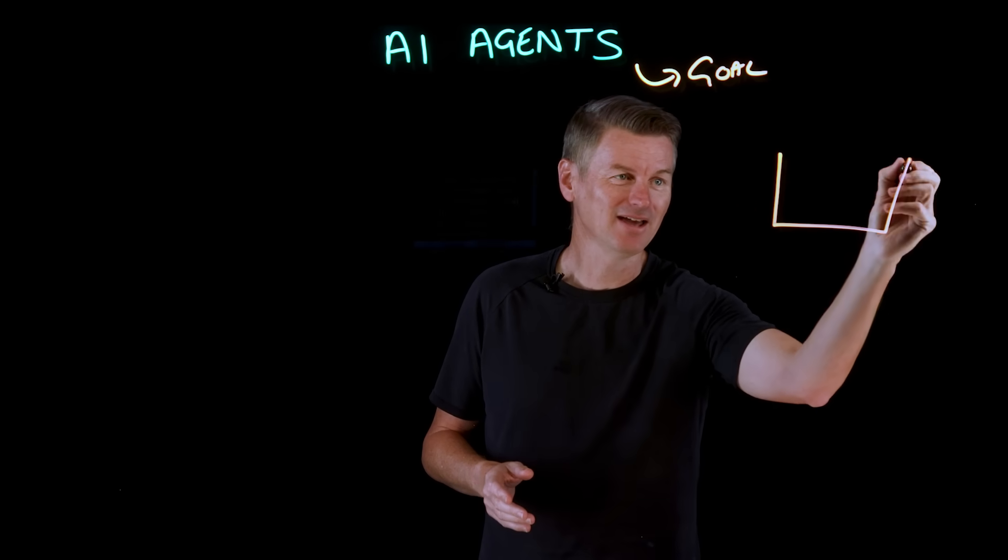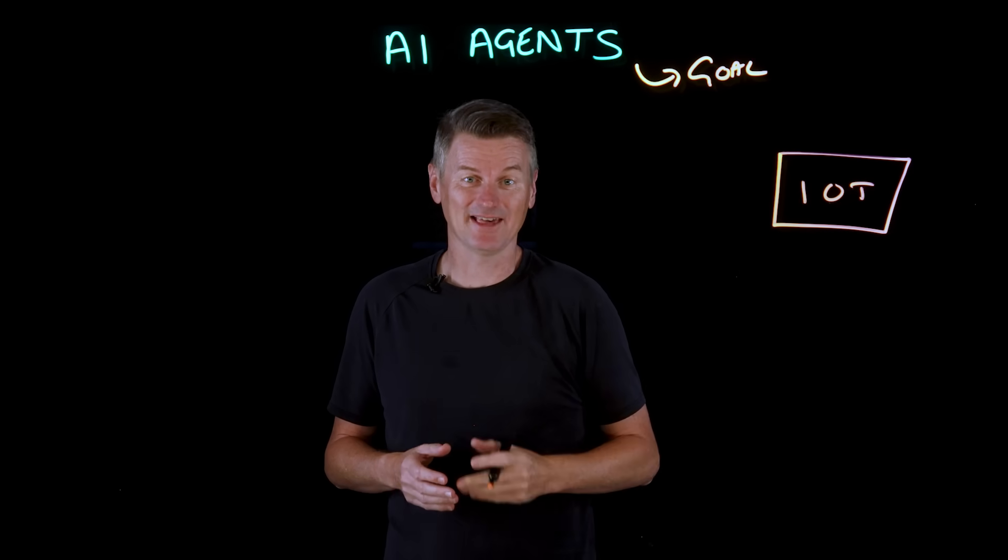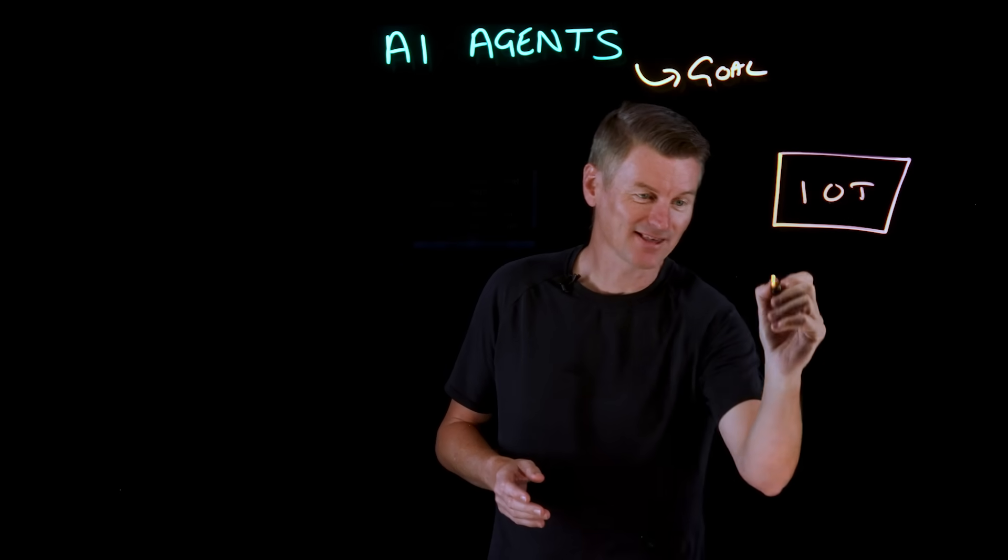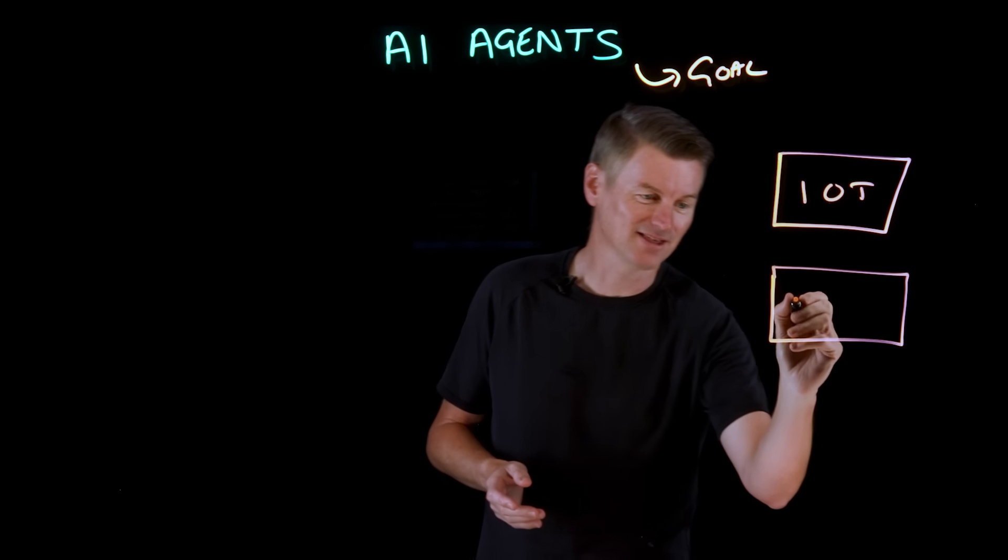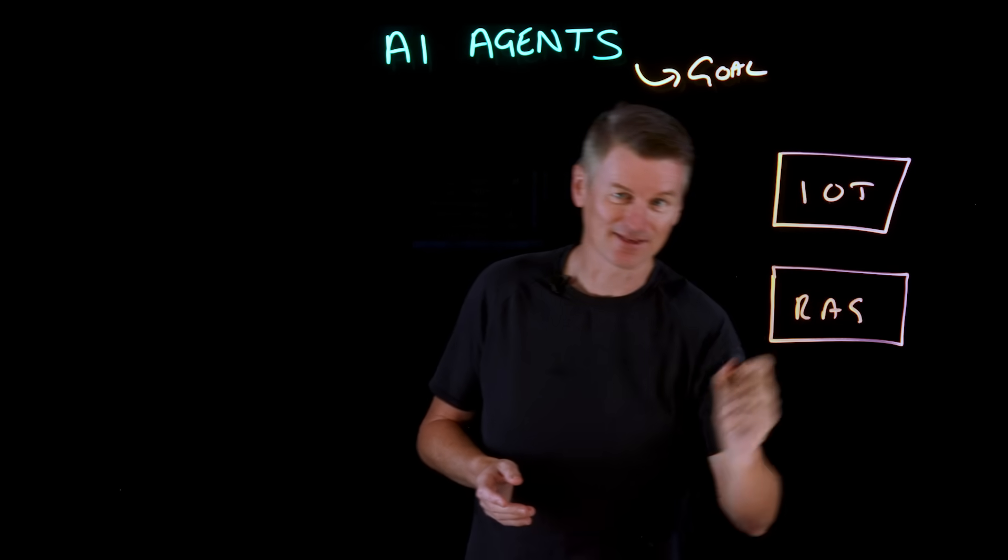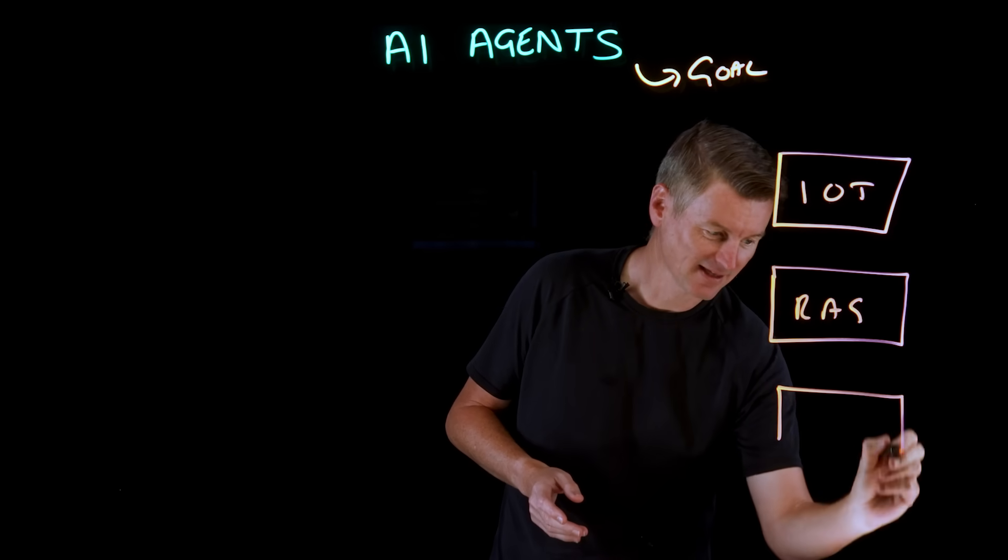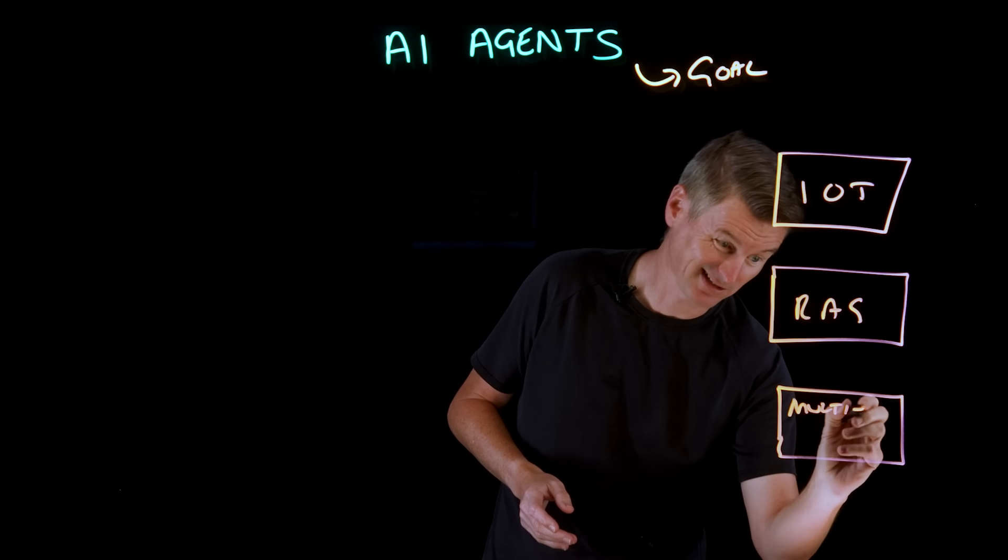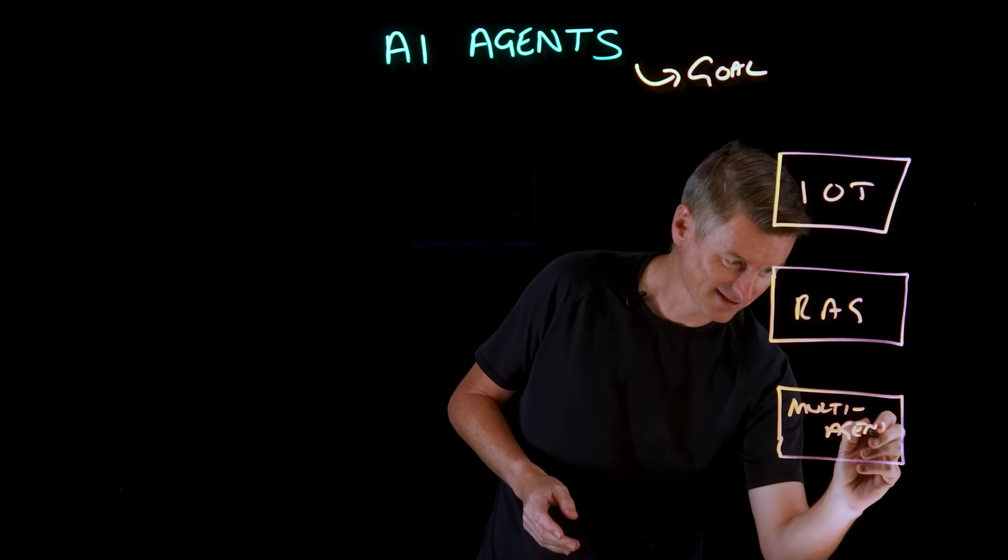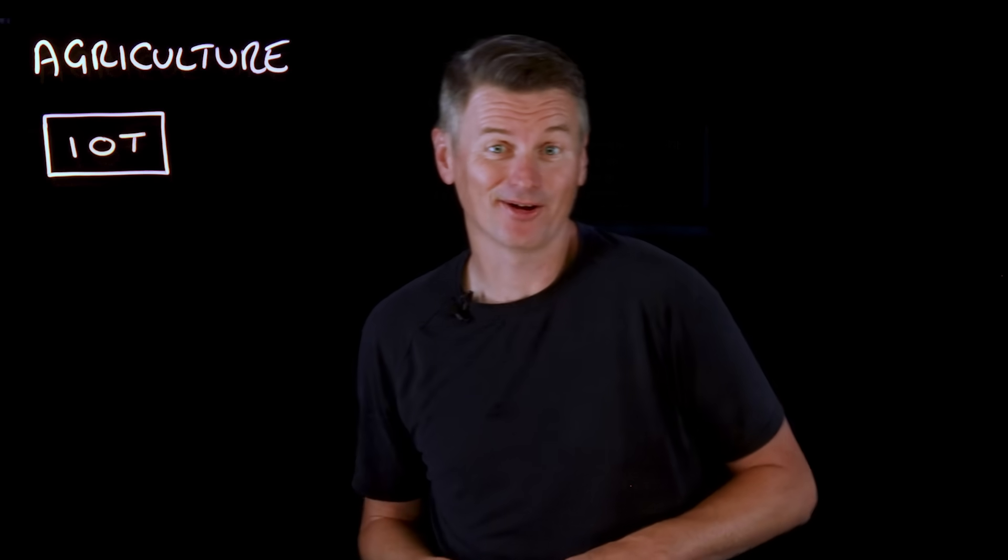Well, they relate to Internet of Things or IoT, that's the first one. The second one we'll look at relates to Retrieval Augmented Generation, that's RAG. And then the third one we're going to take a look at multi-agent workflows, which is just, well, multi-agent. So let's take a look. Let's start with agriculture.